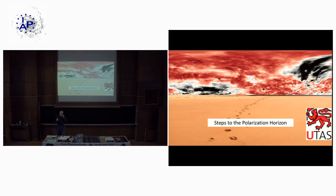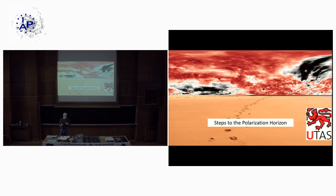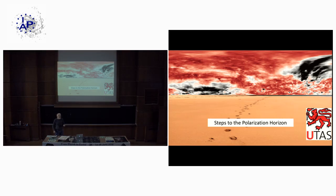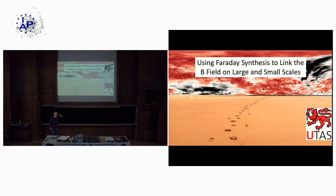In the radio, the magnetic field shapes much of what we see in the sky. For many radio emission processes, the magnetic field is an indispensable part of the emission itself. Synchrotron radiation is an example where we would see nothing from cosmic ray electrons if they didn't interact with the galactic magnetic field. We still have very few quantitative ways of tracing the interstellar magnetic field in the Milky Way, and I'm going to talk about one with a long history but a very bright future. Today I'll talk about using Faraday synthesis to link the magnetic field on large and small scales.